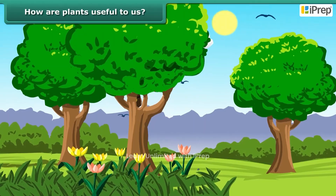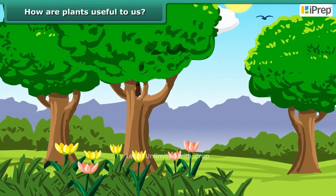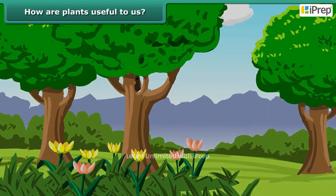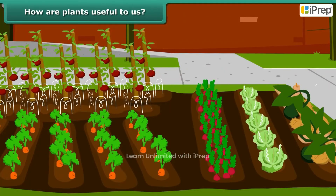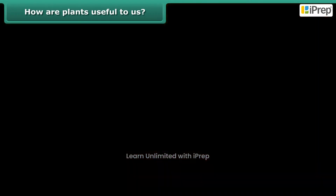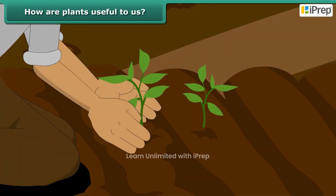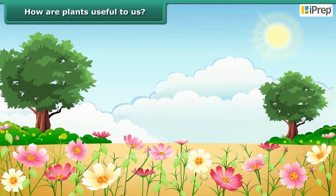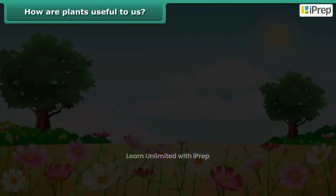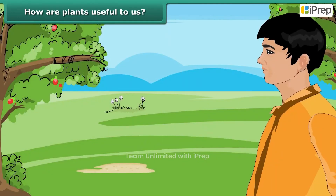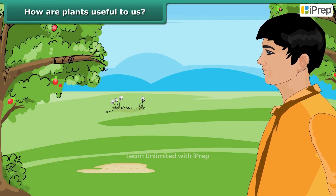Plants are useful to us in many ways. They are our primary source of food. They prevent soil erosion. They also beautify our surroundings. They give out oxygen which is used by humans and animals.